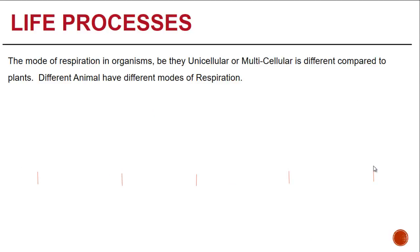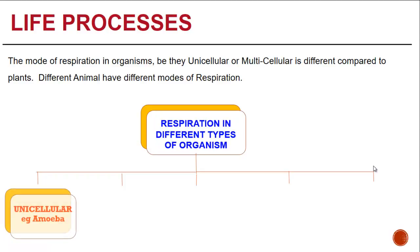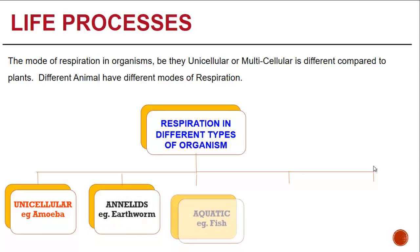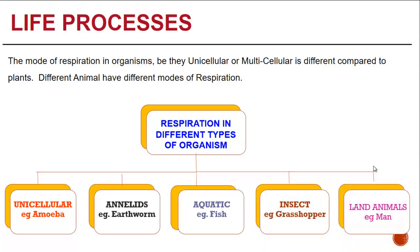The mode of respiration in organisms may be unicellular or multicellular and is different compared to plants. Different animals have different modes of respiration: unicellular — example the amoeba; annelids — example the earthworm; aquatic — example fish; insects — example the grasshopper; and land animals — example man.